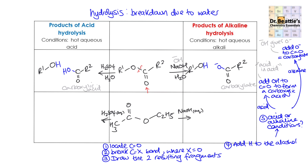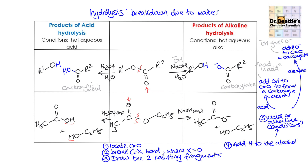Your answer under acidic conditions should be as follows. What we've done is added an OH — because it's under acidic conditions — onto the carbonyl-containing component, and then a hydrogen onto the alcohol fragment. To get to these two fragments, we located the carbonyl in step one and broke the C-O bond. Under alkaline conditions, your product looks very similar, but this time your alcohol fragment is exactly the same, while the carboxylate is formed because of the alkaline conditions. We followed exactly the same process throughout.